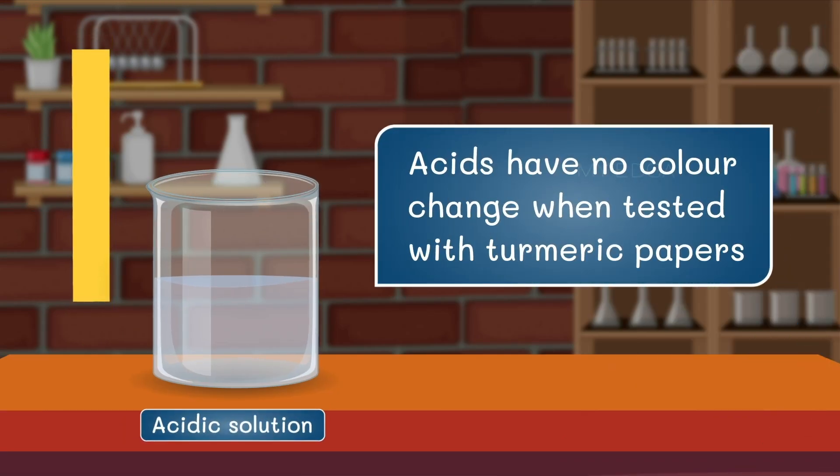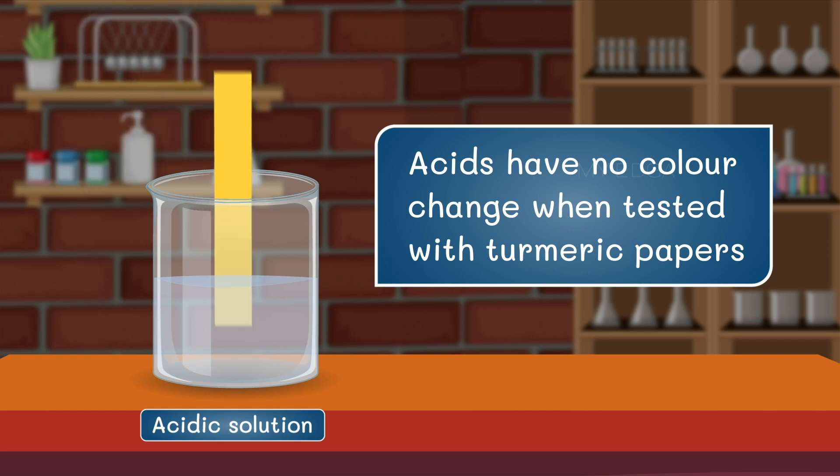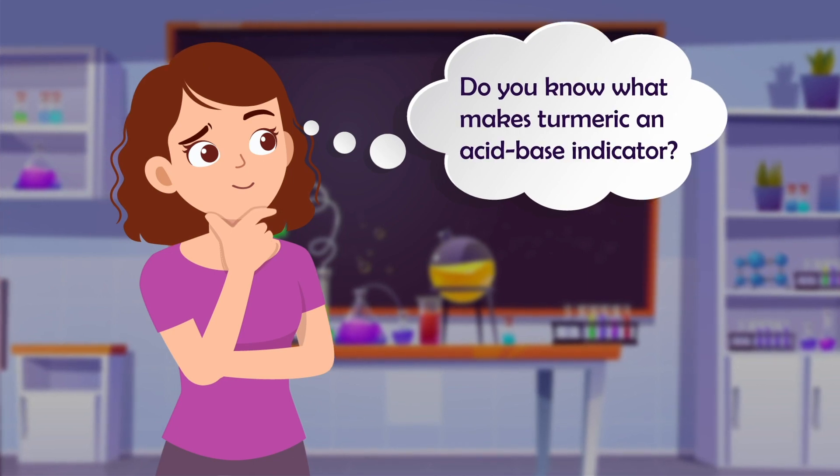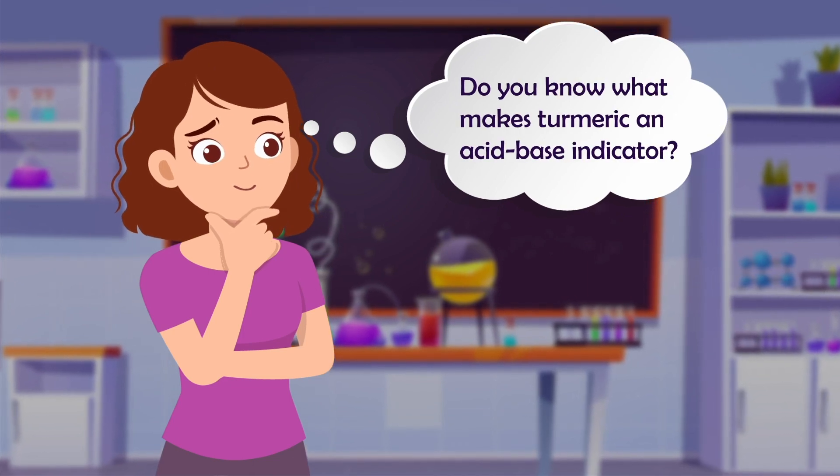Acids have no color change when tested with turmeric papers - that is, the color of turmeric which is yellow remains unchanged. Do you know what makes turmeric an acid-base indicator?